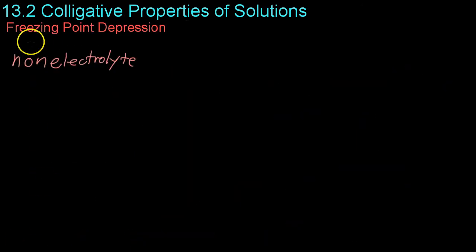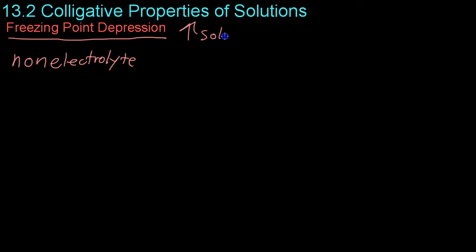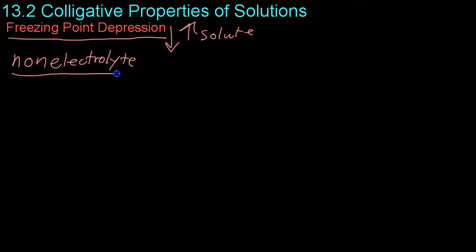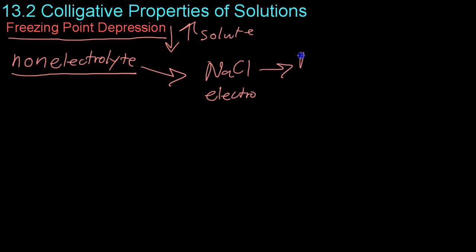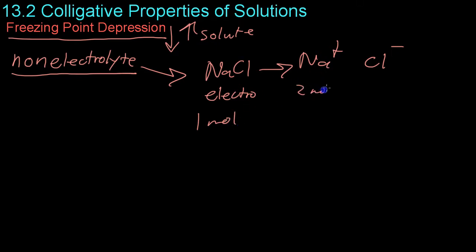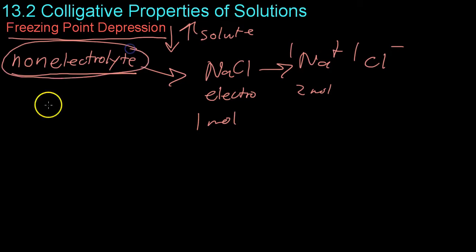Another colligative property is freezing point depression. As you add solute, the freezing point — the point at which something becomes solid — goes down. This applies specifically to non-electrolyte molecules, because an electrolyte like NaCl breaks up into Na⁺ ions and Cl⁻ ions. So when you add 1 mole of NaCl, you're really adding 2 moles of solute: 1 mole of Na⁺ ions and 1 mole of Cl⁻ ions. For everything we're discussing, we will be dealing with non-electrolyte solutes.